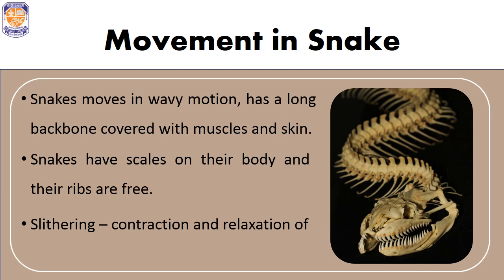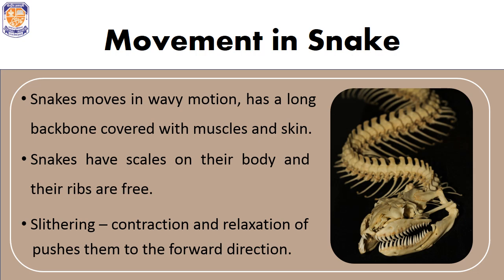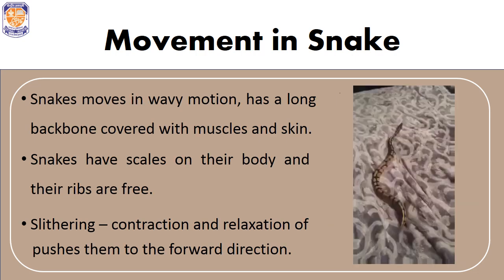Their ribs are free — not attached to each other as in most animals. They move in a slithering or zigzag manner because of the contraction and relaxation of muscles, which pushes them in the forward direction. Snakes move best on rough surfaces and are not able to move on smooth surfaces.